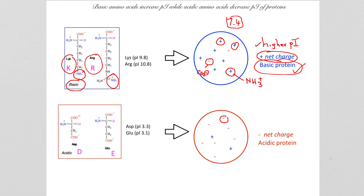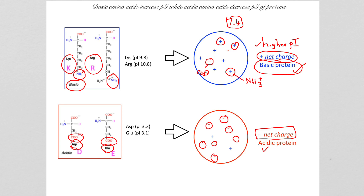If a protein has more carboxyl groups, which come from aspartic acid and glutamic acid due to their R-group carboxyls, then if the protein has a lot of these amino acids compared to the basic amino acids, it will tend to have a net negative charge at pH 7.4. These are called acidic proteins. Acidic proteins are more common in the human body, while basic proteins are less common.